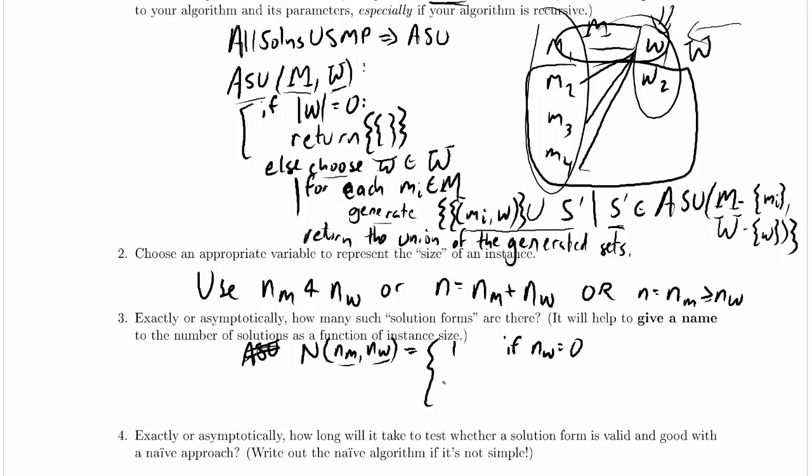So we generate one solution for each mi in m. That actually means that we're generating nm solutions times the number of sub-solutions. Now, how many sub-solutions are there? Well, this is big and hairy and gross, except that we understand recursion.